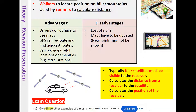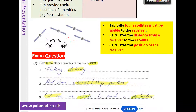Typically four satellites work together to calculate the distance from the receiver and also calculate the position of the receiver — essentially where you are. There are various situations where you may use GPS, such as tracking a delivery.